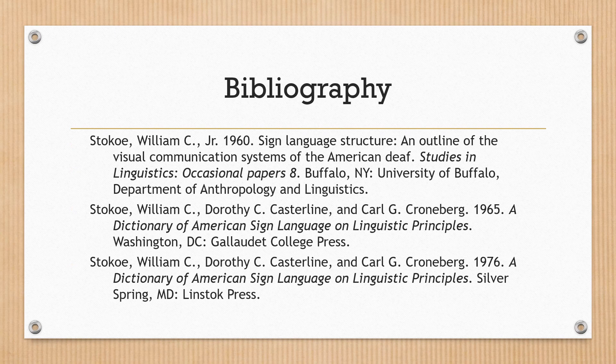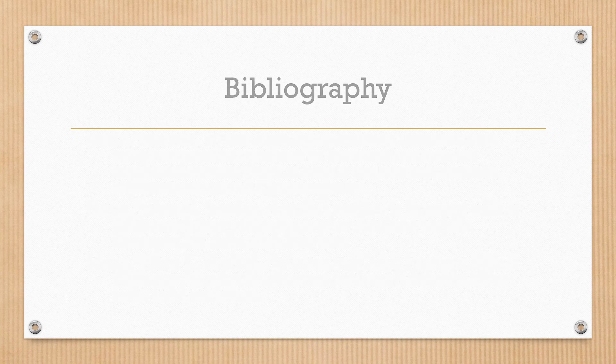Bibliography. Stokoe, William C. Jr., 1960. Sign Language Structure: An Outline of the Visual Communication Systems of the American Deaf. Studies in Linguistics, Occasional Papers 8, Buffalo, New York: University of Buffalo, Department of Anthropology and Linguistics. Stokoe, William C., Dorothy C. Casterline and Carl G. Cronberg, 1965. A Dictionary of American Sign Language on Linguistic Principles. Washington, D.C.: Gallaudet College Press. Stokoe, William C., Dorothy C. Casterline and Carl G. Cronberg, 1976. A Dictionary of American Sign Language on Linguistic Principles. Silver Spring, MD: Linstok Press.